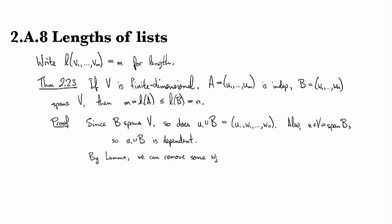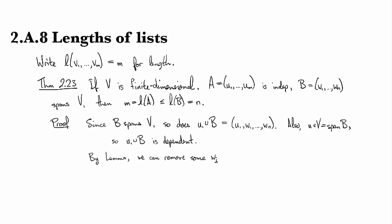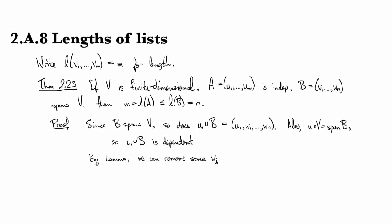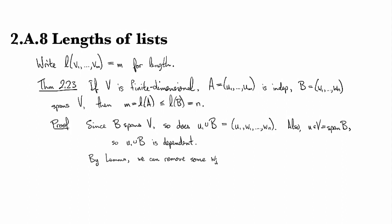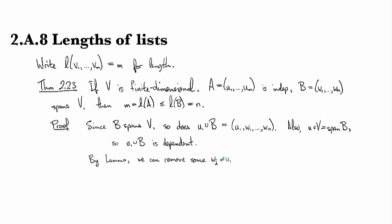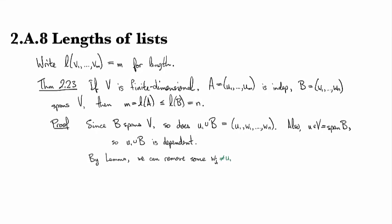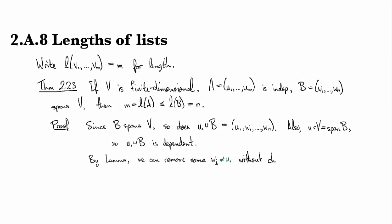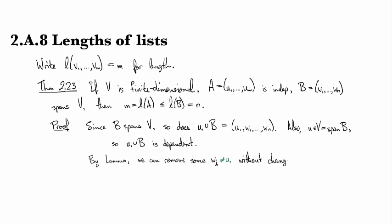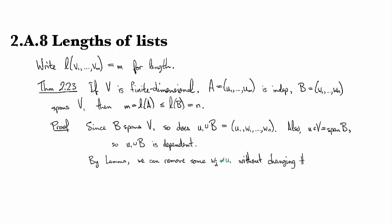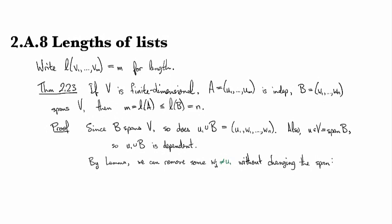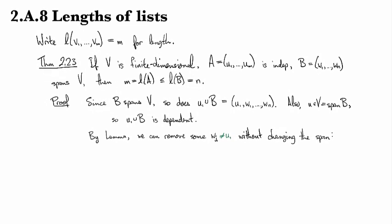And so key point, we can choose it to be other than U1. And the lemma says that when we remove this guy, the span does not change.